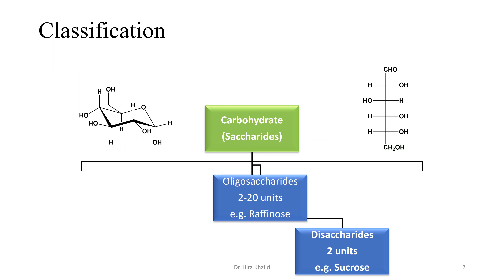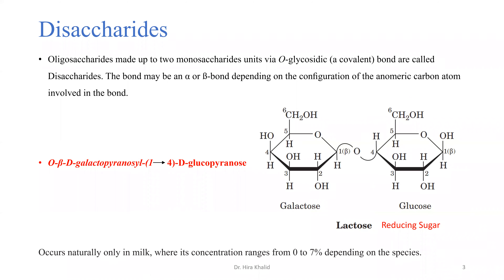Disaccharides are oligosaccharides made up of two monosaccharide units — exactly two, no more. When they combine through a covalent bond, that covalent bond is called an O-glycosidic bond. The O stands for oxygen, and I will explain later in the next slides how this bond between oxygen is formed.